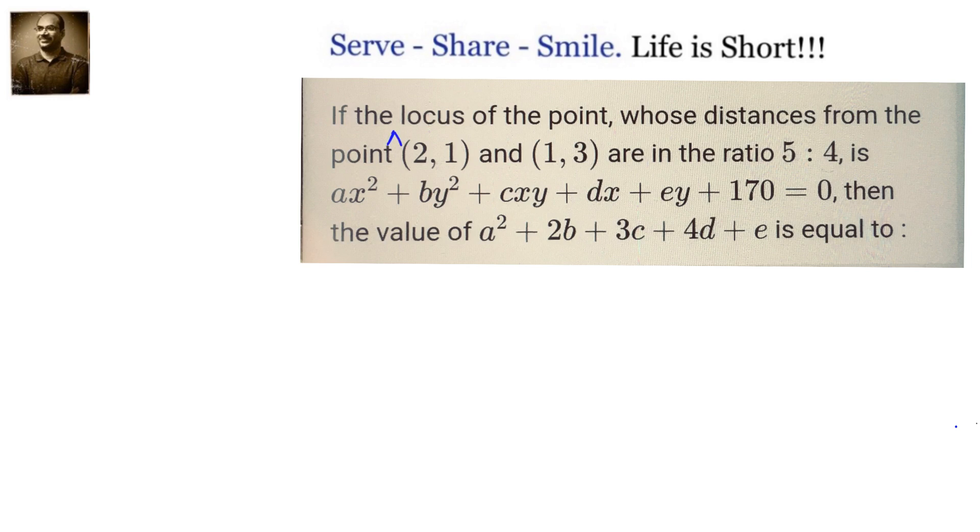Let us take the point as P(x,y). The given points are A and B. We have been told that the distances from points A and B to P are in the ratio 5:4, that means PA/PB = 5/4.